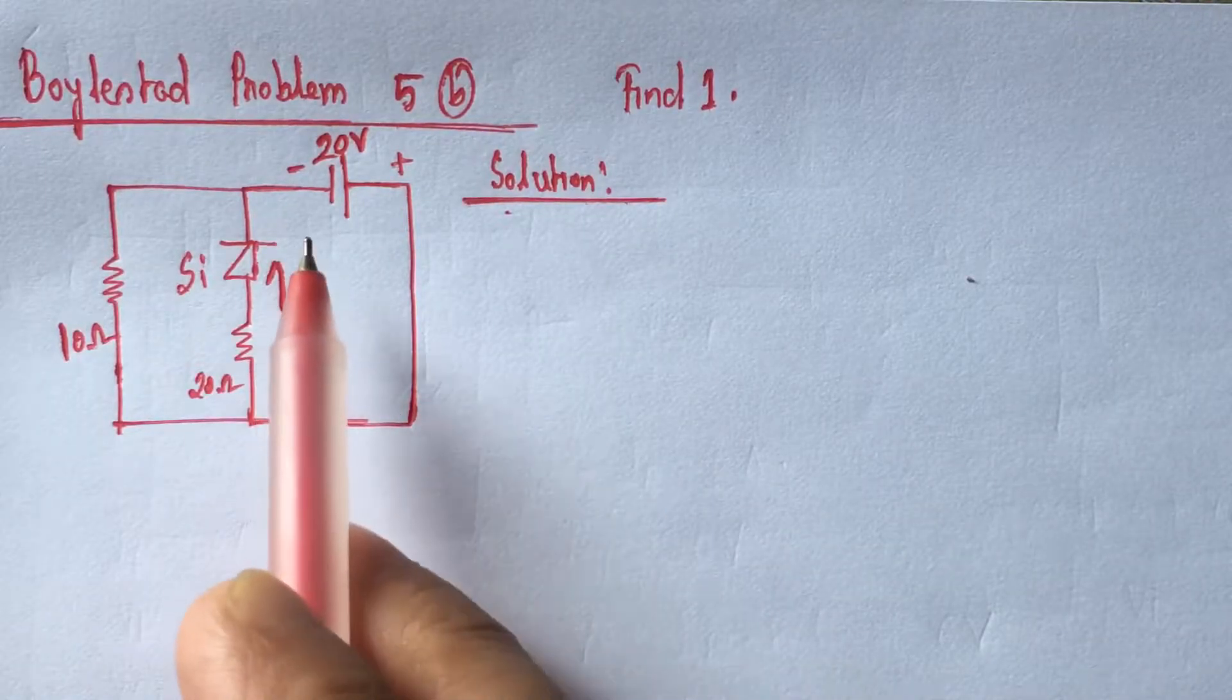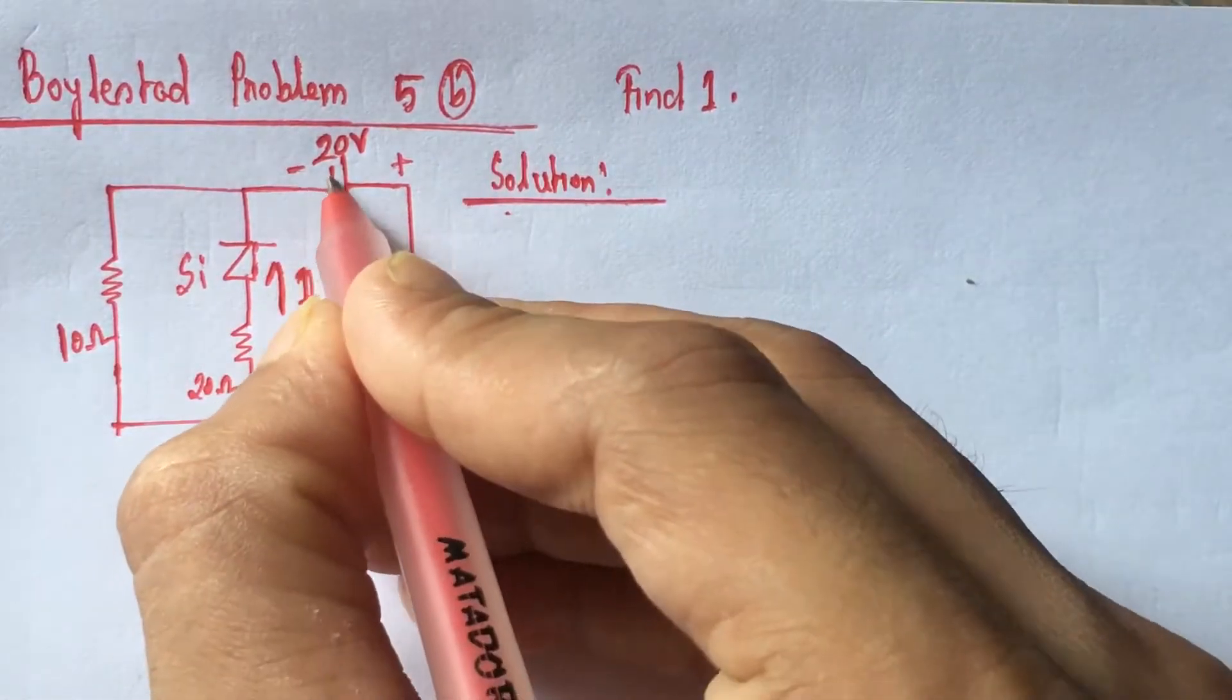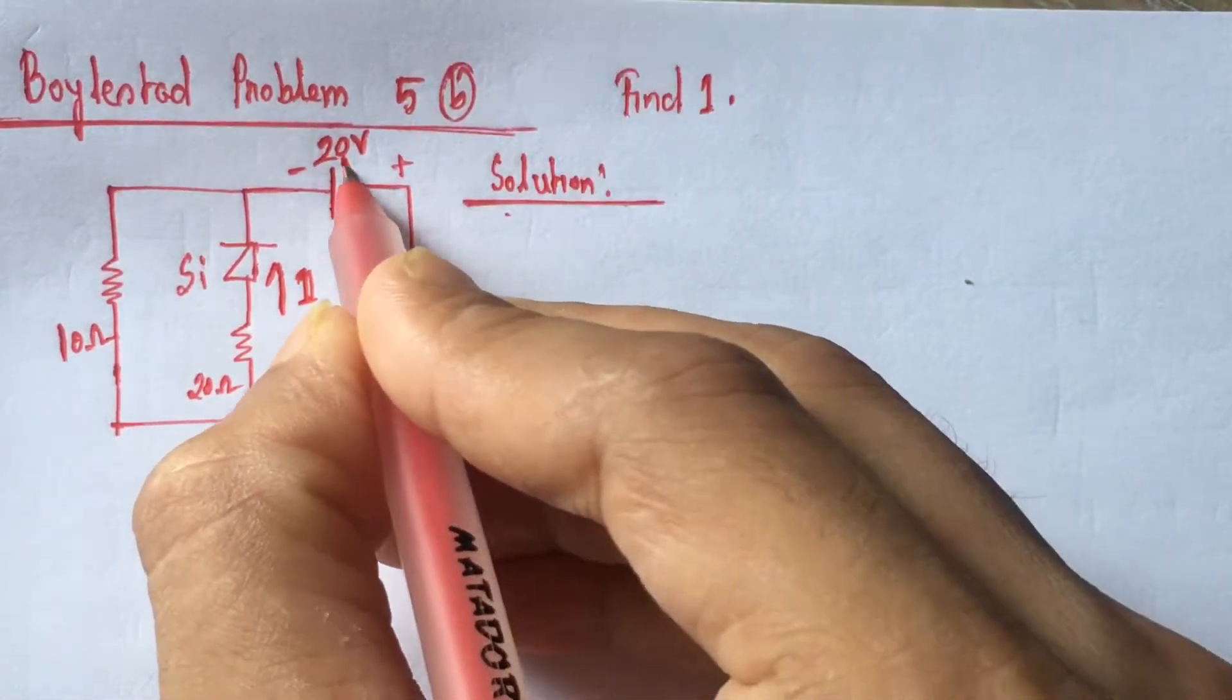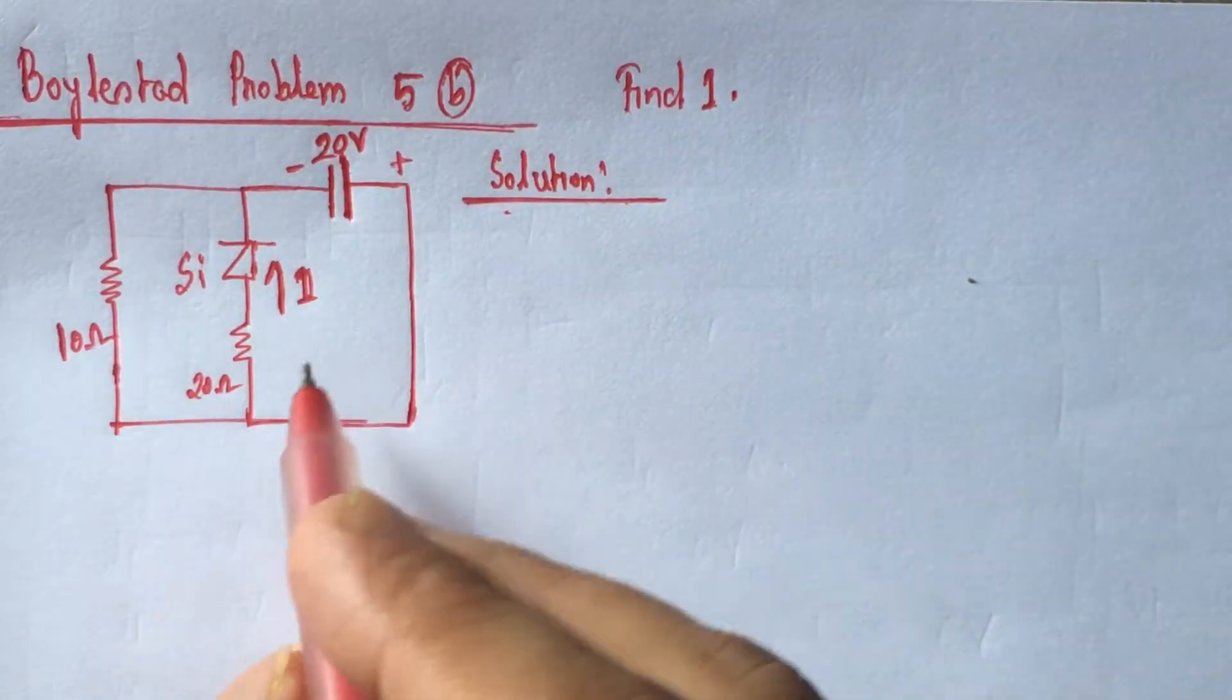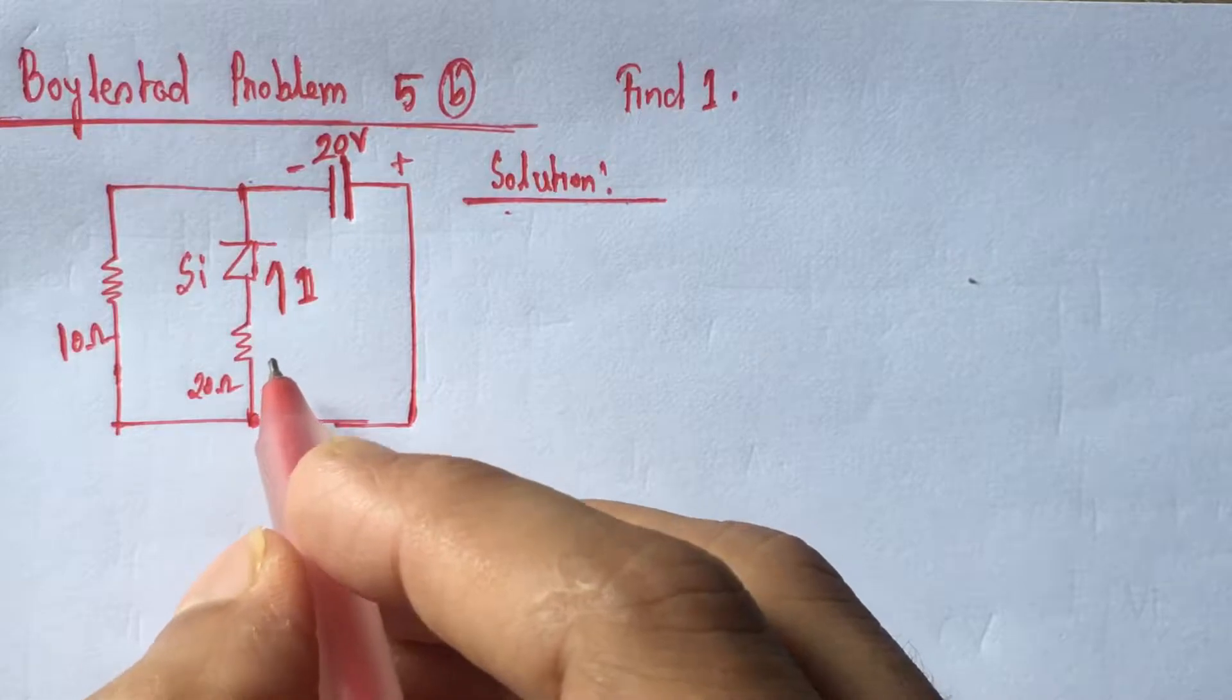Let us determine whether the diode is on or off. From the circuit we see that 20 volts is applied across this diode along with the resistance.